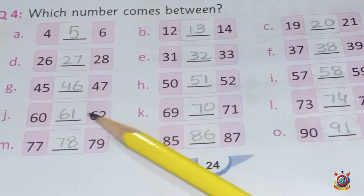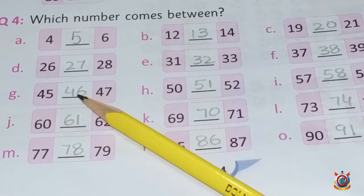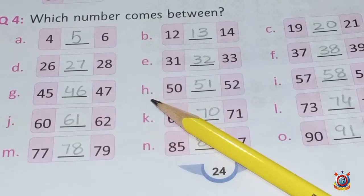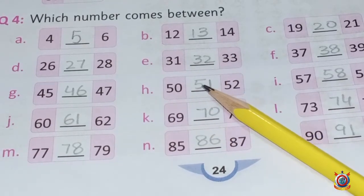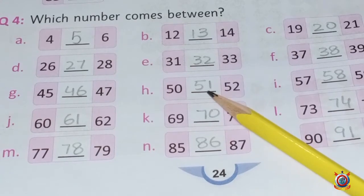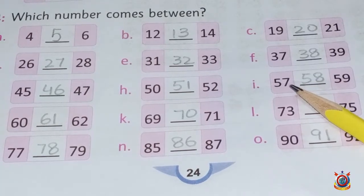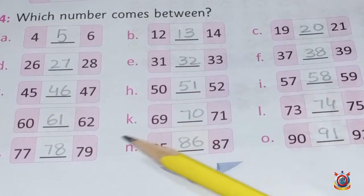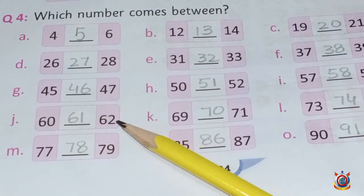Now part G: which number comes between 45 and 47? The answer is 46. Now part H: which number comes between 51 — and part I: which number comes between 57 and 59? The correct answer is 58.